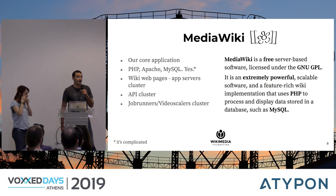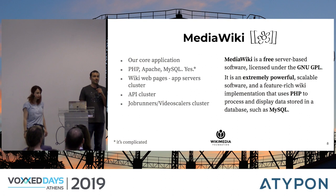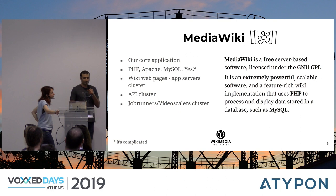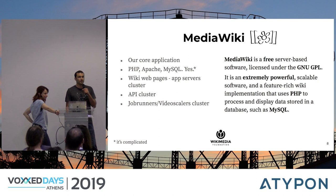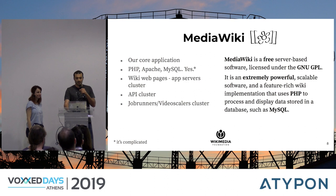We have clusters for this software. We have our app servers cluster, which is used when you actually view a page. We also have an API cluster, which gets used when you interact with Wikipedia in a number of ways — for example, we have a visual editor, a what-you-see-is-what-you-get editor, and your browser interacts with this API cluster. And we have a job runners slash video scalers cluster, because we use MediaWiki for video scaling. When a volunteer uploads a video, it needs to be transcoded into various resolutions and codecs. Yes, it's MediaWiki that does that, although that's not particularly great.